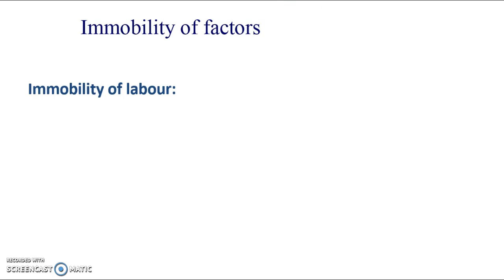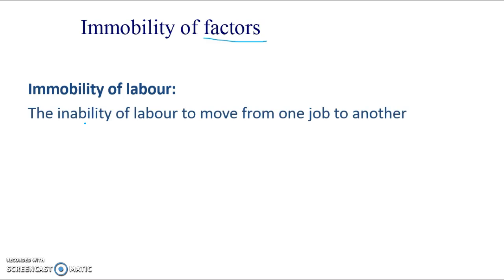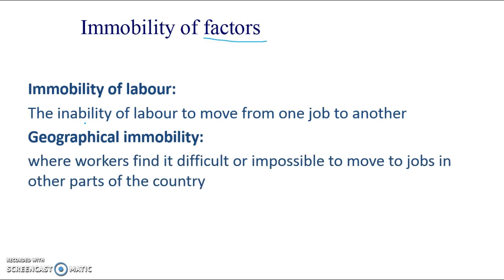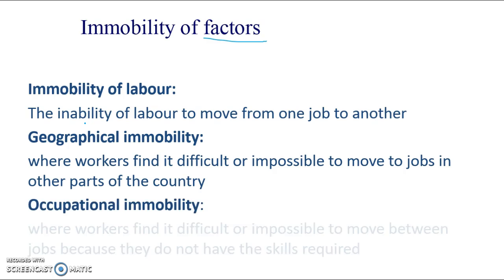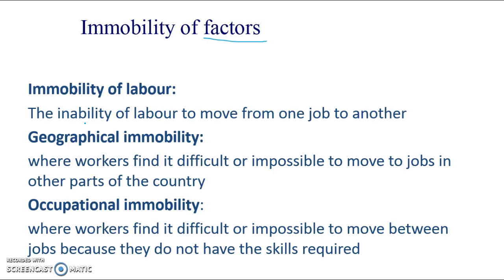Finally, the immobility of factors — which can be any of the factors of production, but usually when we're looking at this we're looking at labour. It's the inability of labour to move from one job to another. The two that are mentioned in the specification are: geographical immobility, where workers find it difficult or impossible to move to jobs in other parts of the country — maybe because of travel, lack of awareness of job opportunities, or housing costs — and occupational immobility, which is the difficulty of moving between one occupation and another. It's usually skills-based and experience-based.